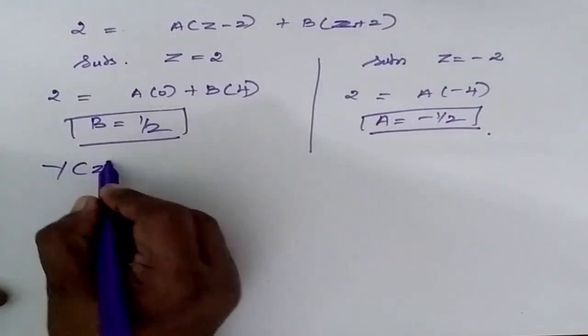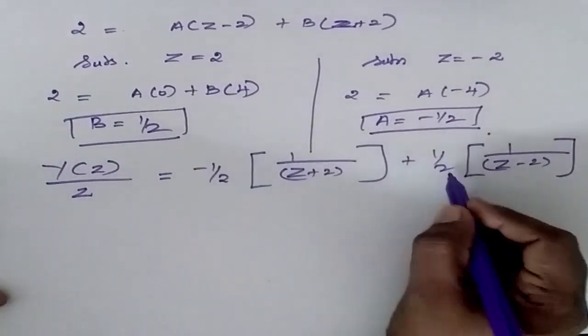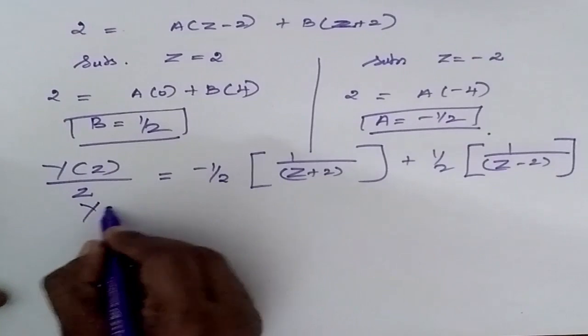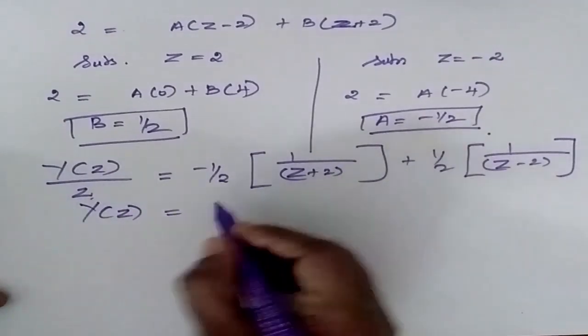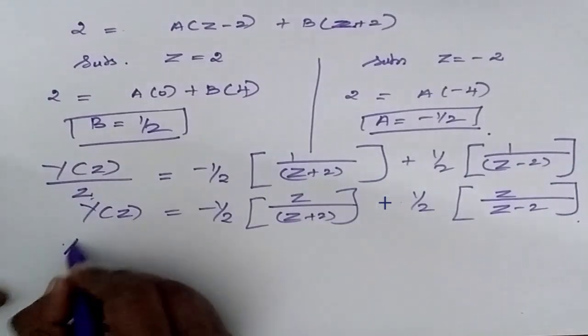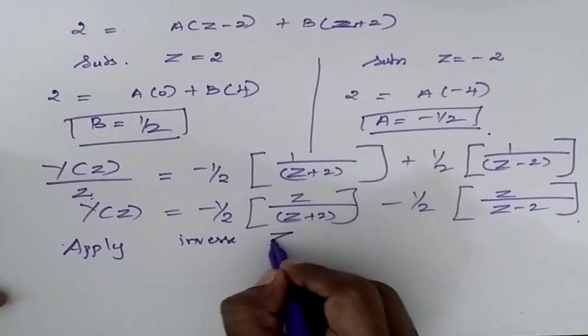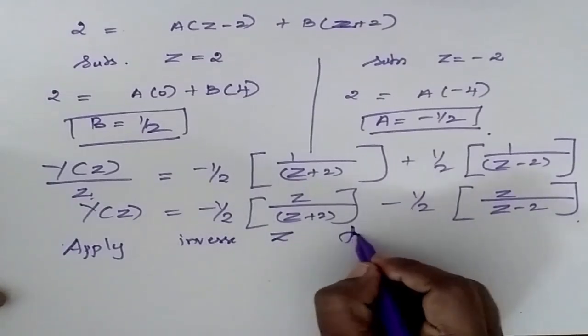So now y of Z by Z is equal to my B is 1 by 2. So now y of Z is equal to bring this Z this side. Now apply inverse Z transform.